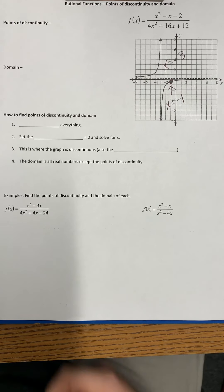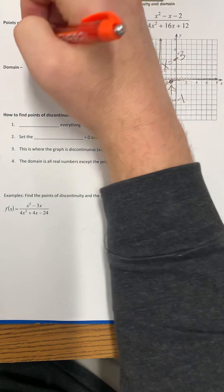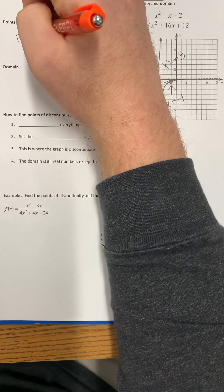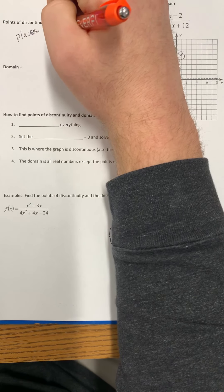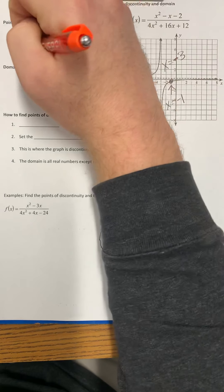At x equals negative one, we see there's two places in which we would have to pick our pencil up in order to draw the graph. We call those points of discontinuity, so points of discontinuity are places where the graph is not continuous or broken.